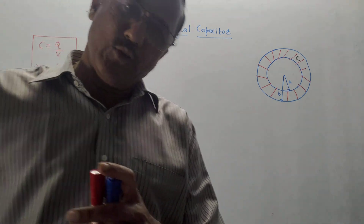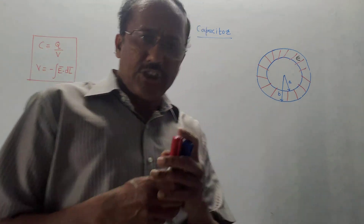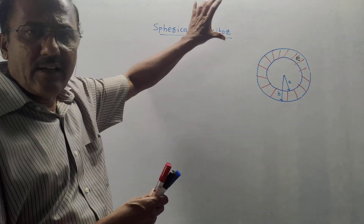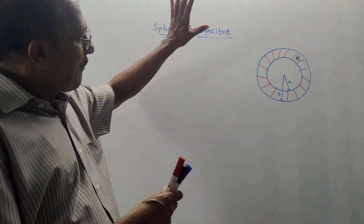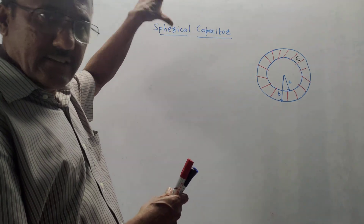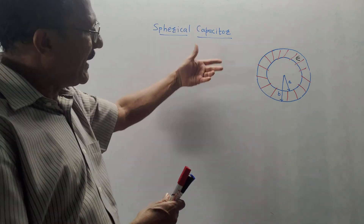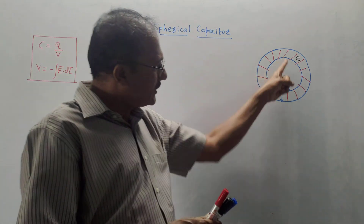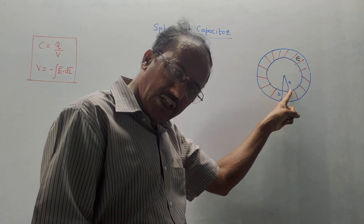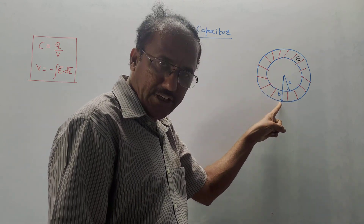Hello and welcome. Today's session is for the derivation of the spherical capacitor. As the name indicates, the nature of the capacitor is spherical. We are considering two spheres — the inner sphere has radius a and the outer sphere has radius b.